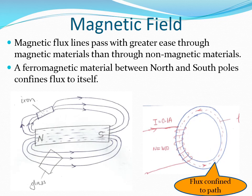A ferromagnetic material placed between a north pole will confine flux to itself. In the diagram, we have a coil wound around a ring of a ferromagnetic material. One end of the coil will become a north pole and the other end is a south pole. The ring made from ferromagnetic material is circular and creates a path through which the flux can be established. Because it is a magnetic material, it causes the flux to be confined to within itself.